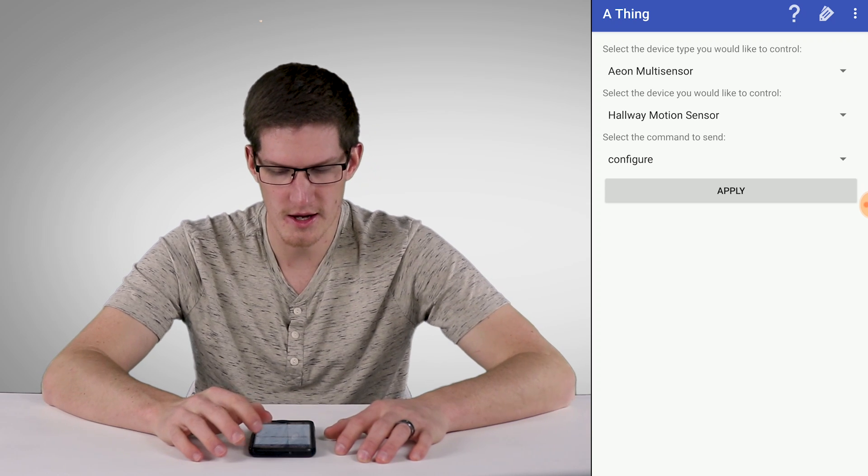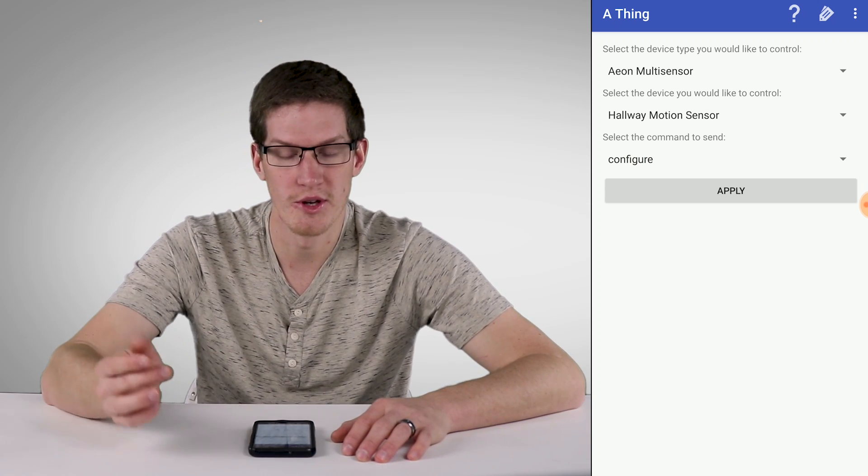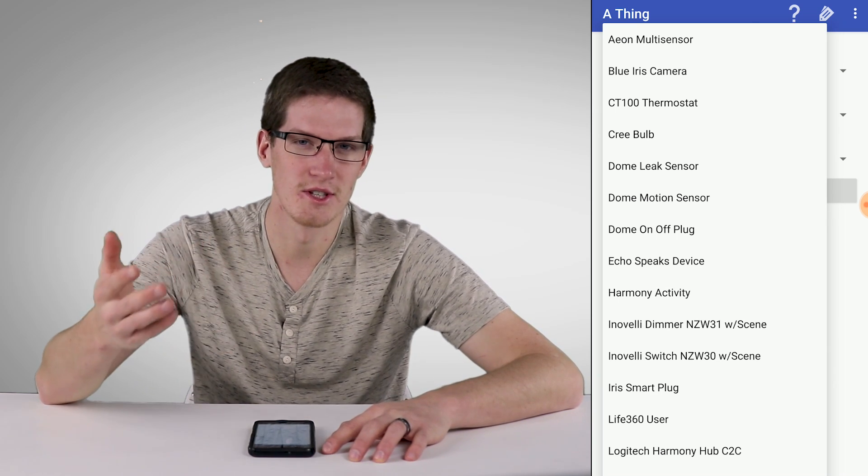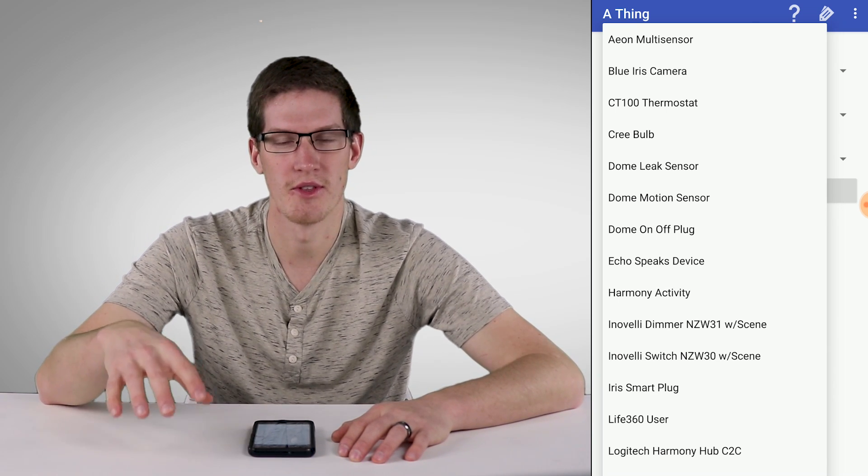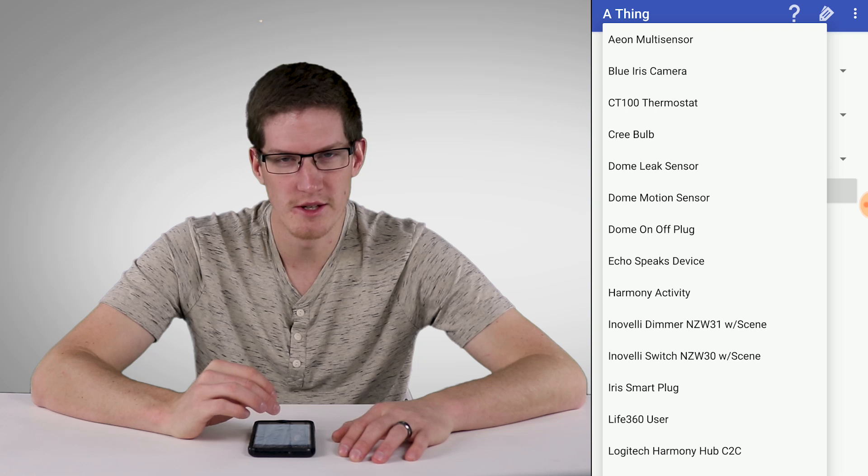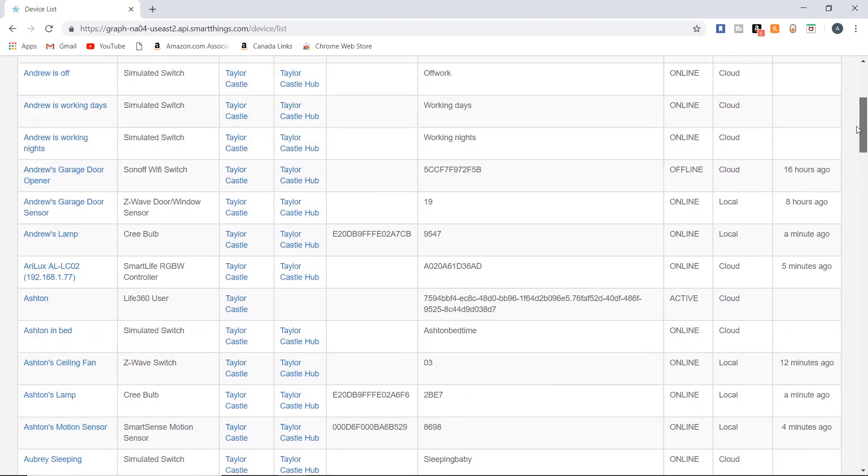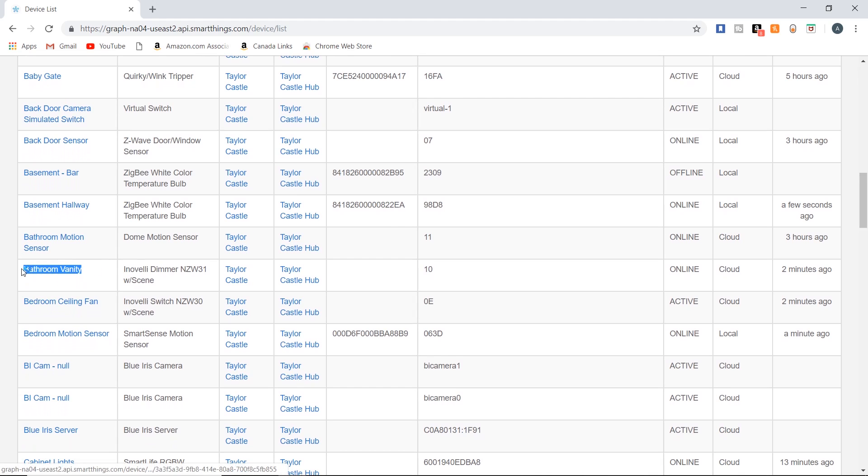There it is. And instead of just selecting your thing from a list, you actually have to figure out what the device type in SmartThings that device is. So you may need to hop onto the SmartThings IDE on the computer and just figure out real quick what device type that thing is using.